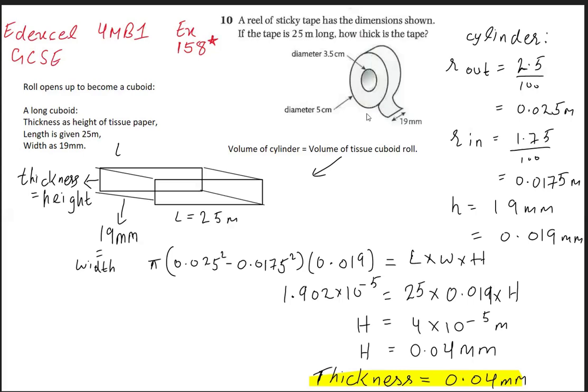The geometric concept here is the volume of the cylinder you see here will be equal to the volume of the tissue paper when you open it up fully. Imagine the tissue paper is opened up fully, it turns into a cuboid, a very thin, very long cuboid of length 25 meters.